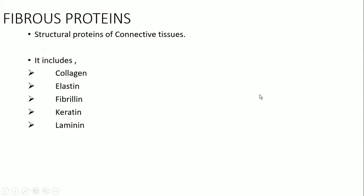First, introduction. Fibrous proteins — what are fibrous proteins? These are structural proteins present in the connective tissue of our body. They include collagen, elastin, fibrillin, keratin, and laminin. Today we will be learning more about collagen and fibrillin.